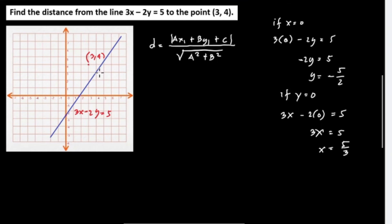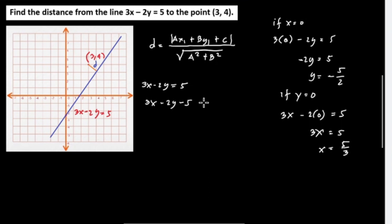From the line to the point (3, 4), the perpendicular distance is D. We identify A, B, and C from the equation: rewriting 3X minus 2Y equals 5 as 3X minus 2Y minus 5 equals 0, so A equals 3, B equals negative 2, and C equals negative 5. The point gives X₁ equals 3 and Y₁ equals 4.